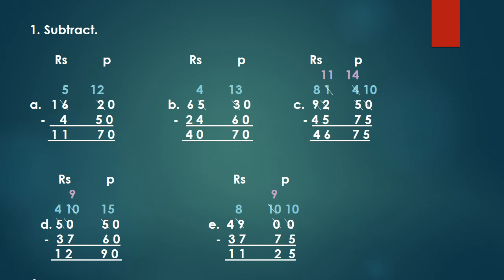Let's solve example D. 50 rupees 50 paise minus 37 rupees 60 paise. 0 minus 0 equals 0. Children, we cannot subtract 6 from 5, so we borrow. But the next number is 0, so we borrow from the next. 5 becomes 4 and the 0 becomes 10. Now we can borrow from the 10. The 10 becomes 9 and the 5 becomes 15. 15 minus 6 equals 9. 9 minus 7 equals 2. 4 minus 3 equals 1. So the final answer is 12 rupees 90 paise.